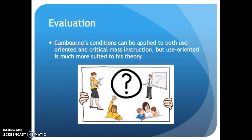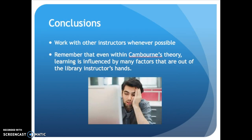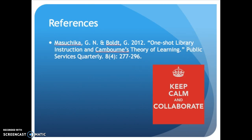Camborn's conditions can be applied to both use-oriented and critical mass instruction, but use-oriented is really much more suited to his theory. Work with other instructors whenever possible so you know what assignments students have coming up and how you can apply your instruction to what they're expected to do. Remember that even within Camborn's theory, learning is influenced by many factors out of the library instructor's hands — such as student engagement and responsibility. We can influence that, but we cannot control it. That's a short summary of 'One-Shot Library Instruction in Camborn's Theory of Learning' by Glenn Masuchika and Gail Bolt.